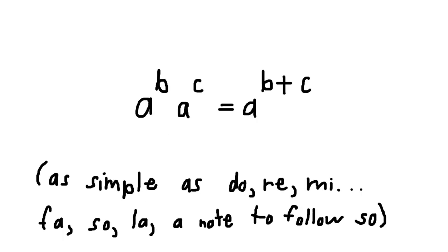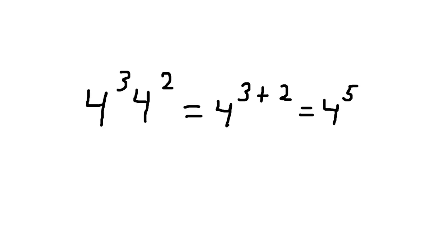Another rule of exponents states that a to the power of b times a to the power of c is equal to a to the power of b plus c. In everyday terms, this means that multiplying something by itself a set number of times and then multiplying by itself another set number of times is like multiplying by itself the sum of those two numbers of times. For example, 4 to the power of 3 times 4 to the power of 2 is equal to 4 to the power of 3 plus 2, which is equal to 4 to the power of 5.